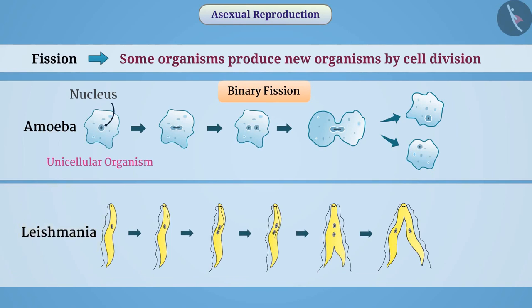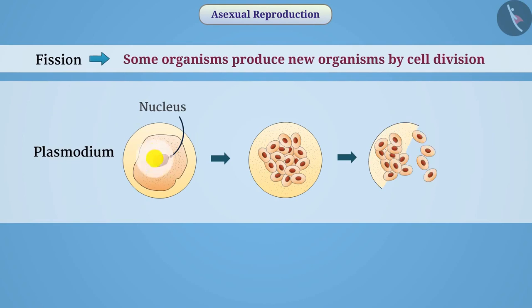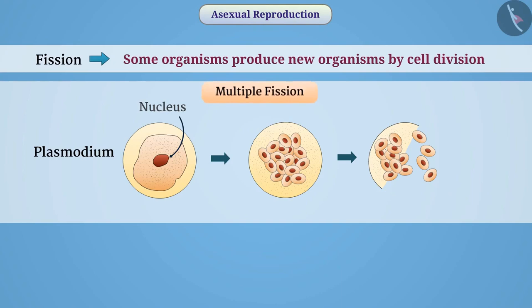Some unicellular organisms such as Leishmania have a more organized body structure. In such organisms, after the division of the nucleus, the cell divides from a fixed orientation. In some organisms such as the malaria parasite Plasmodium, one cell divides into several cells — we call it multiple fission.